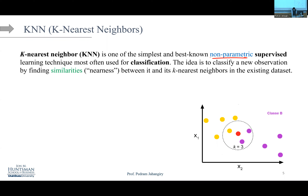The idea is to classify a new observation — let's call it X-test — by finding similarities. Similarity or nearness is a key term we'll revisit in future algorithms. The similarity between two points is basically the distance between them. Small distance means similar; large distance means dissimilar. So you want to see how close that new observation is to two, three, or five neighbors depending on the value of K.